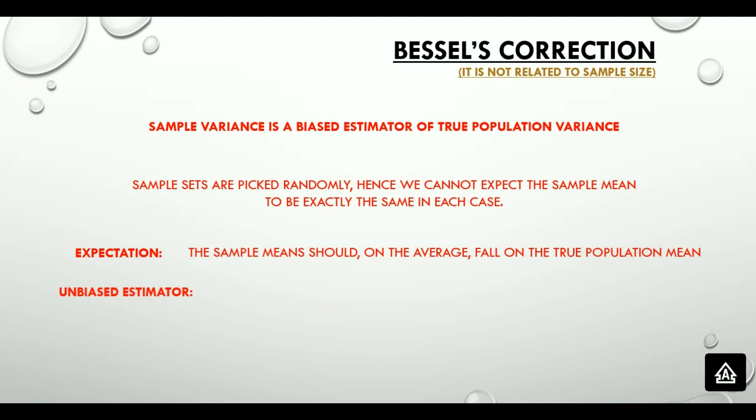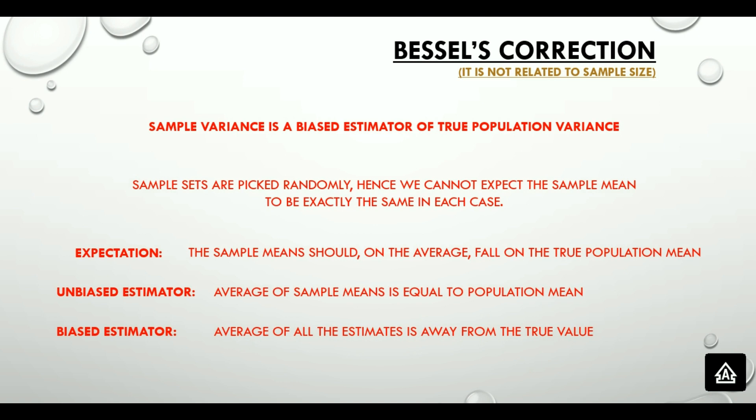The second statement is, what is an unbiased estimator? Average of sample mean is equal to population mean. The third one is a biased estimator, where average of all the estimates is away from the true value. So, out of these three statements, the unbiased estimator statement, which says average of sample means is equal to population mean, is something which we are looking for.